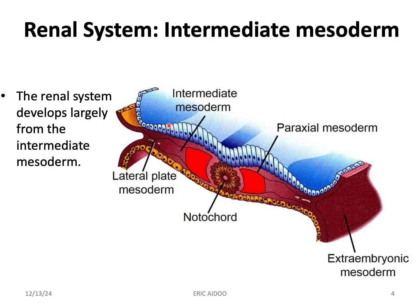And the metanephros. This is a vertical section showing how the mesoderm is structured — the intraembryonic mesoderm. The portion we are interested in is this region: intermediate mesoderm. This will form a cord, a cord from the cranial portion all the way to the caudal portion.